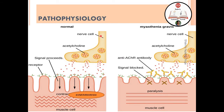In a normal individual, the nerve cell releases acetylcholine from vesicles, which binds onto the receptor site and causes muscle contraction. The excess acetylcholine is hydrolyzed by acetylcholinesterase. If excess acetylcholine enters the muscle fiber it can cause fasciculations or spasm, which is why it must be hydrolyzed.